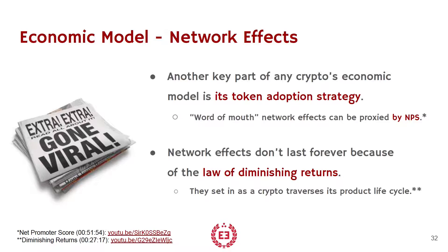The second part of the economic model that is very important to look for is network effects. How does the system improve as more people use it? And why would people want to spread the word? It has to be word of mouth. It doesn't matter what marketing you look at, what vertical, what industry, what nation — word of mouth still matters more to individual people than anything else. The things people are really passionate about, they talk to other people about. There is no substitute for that word-of-mouth network effect. How do you as a token capture and inspire that? Because these network effects are what lead to that J-curve growth — though it will not last forever. Diminishing returns will set in as you move through your product lifecycle.